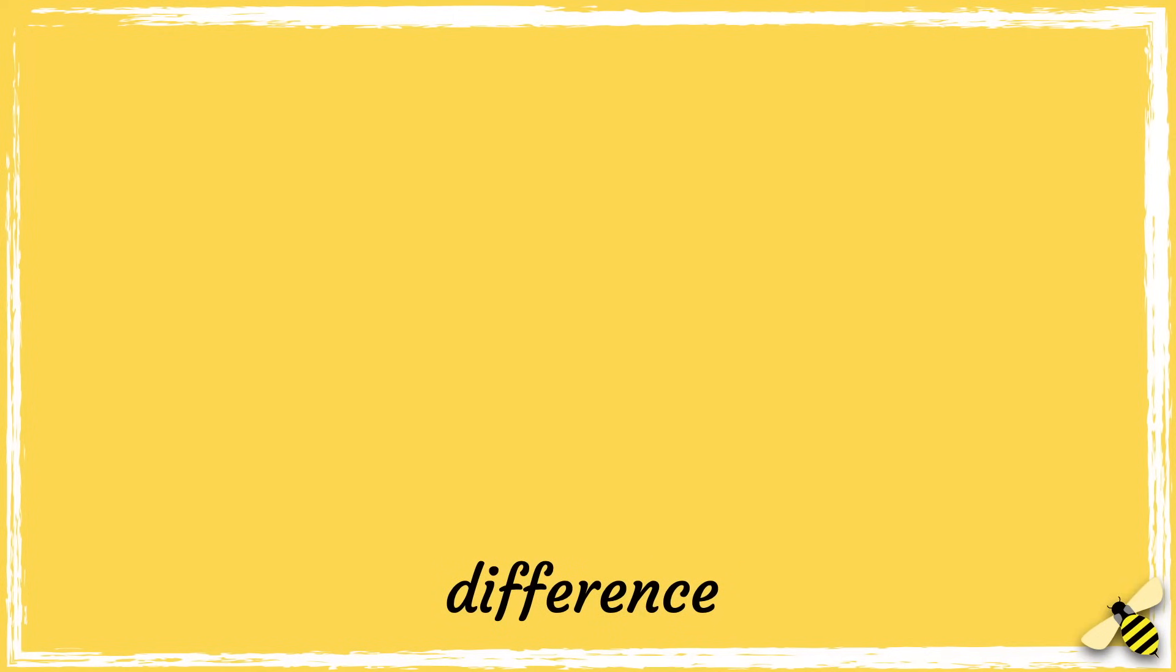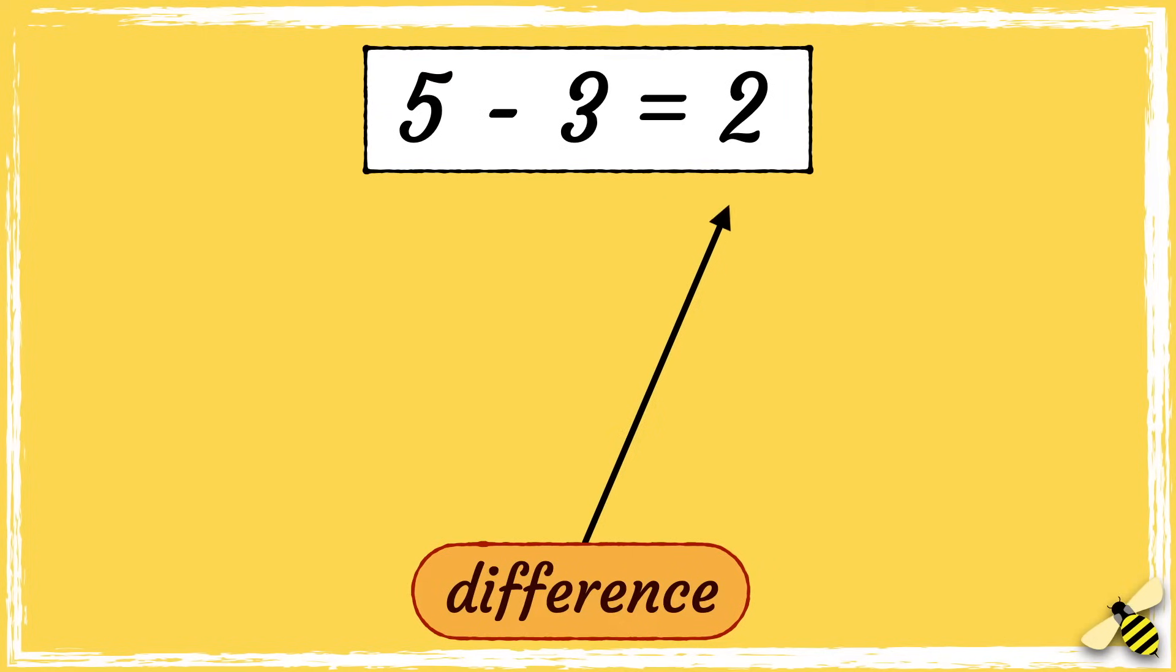To find the difference between two numbers, you subtract the smallest number from the largest number, and then the answer to this calculation is what we call the difference.